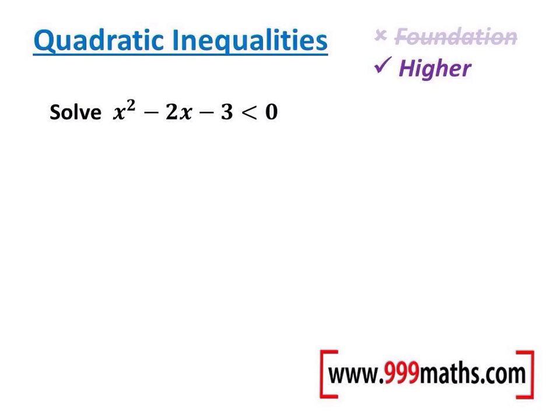So this quadratic inequality, first of all, we need to factorise the left-hand side. Now given that it's an x squared and a number, that'll be a double bracket. So we'll have our x and our x. And I'm looking here for two numbers which multiply to make minus 3 and which add to make minus 2.